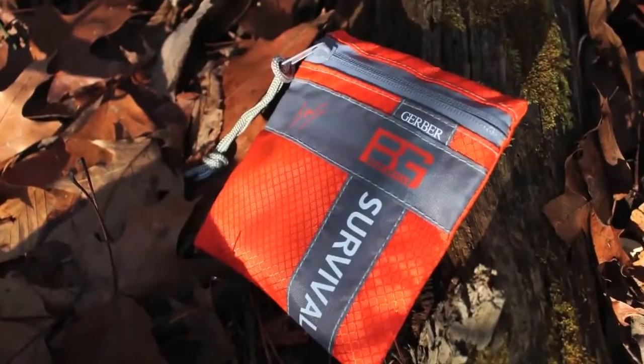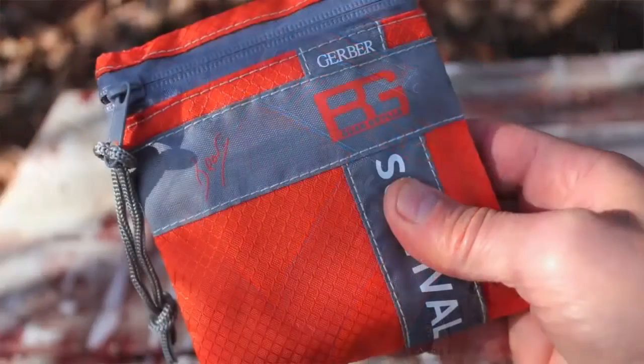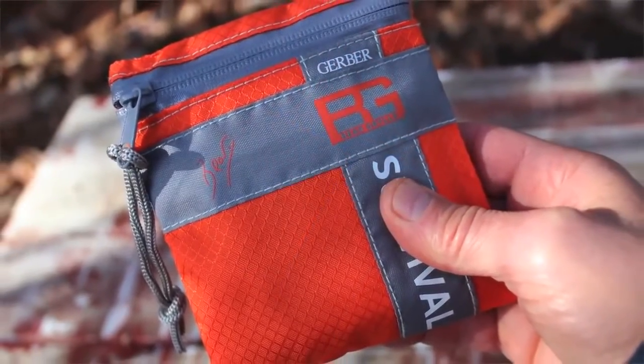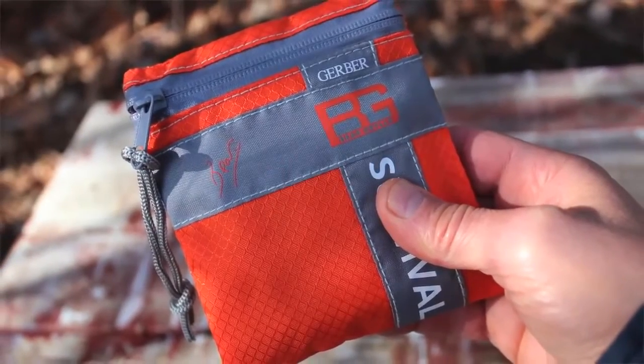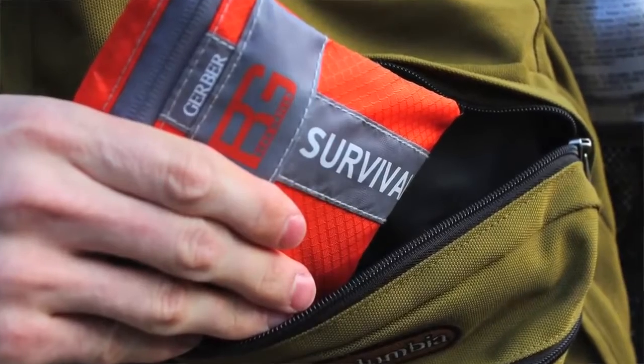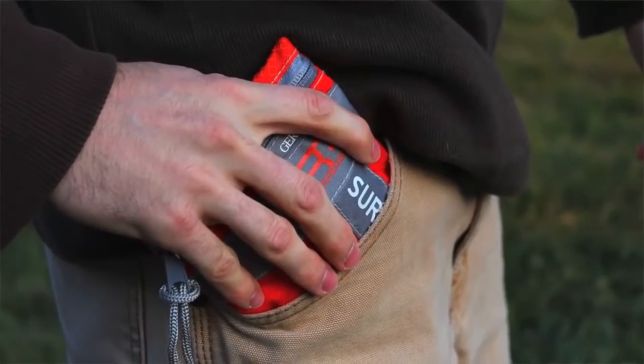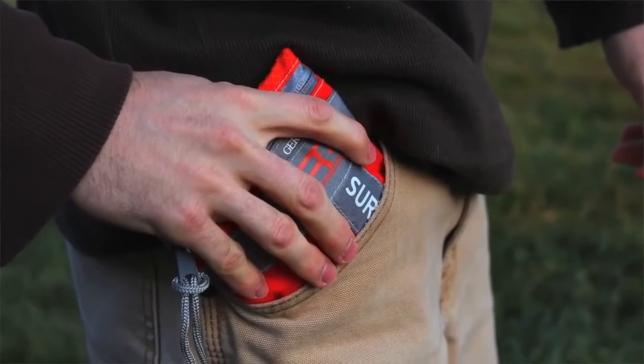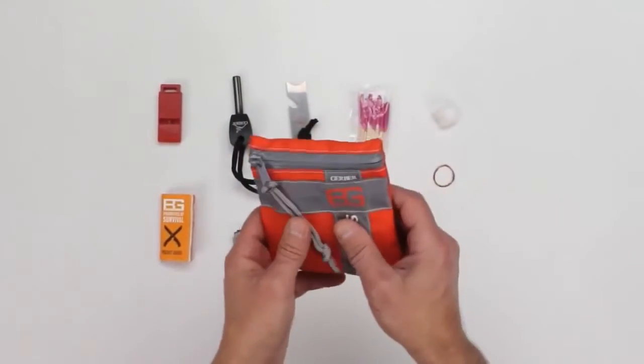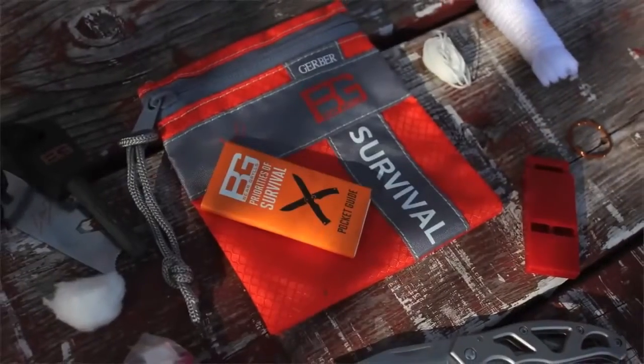Let's jump right in. The Gerber Bear Grylls Basic Survival Kit is designed to be a very compact, affordable kit that can fit into vehicle glove boxes, day packs, purses, tackle boxes, hunting pouches, most pockets—anywhere you have limited space but want a simple survival kit just in case. The basic survival kit includes 11 items, even though Gerber says on the packaging that it's only an 8-piece kit.